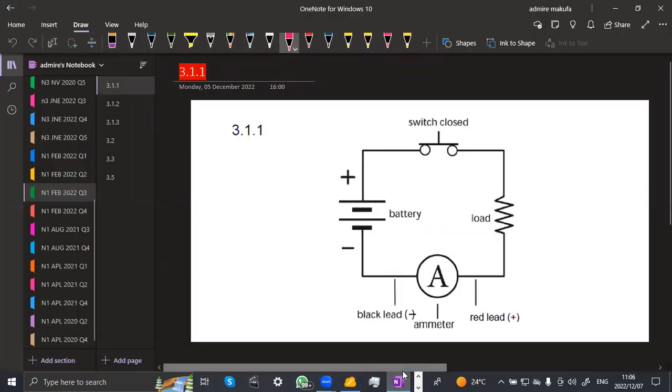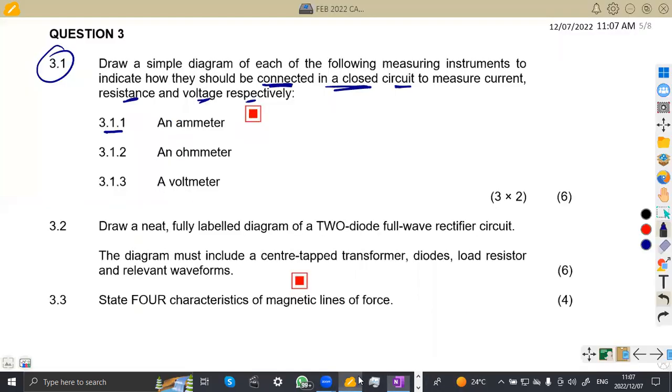We have got the circuit here. So that's 3.1.1. We've got our switch which is closed, the load here, the ammeter, then the battery. Remember ammeter measuring current. But what is important is to show that it is in series. That is the major important part. And also to show that it's a closed switch because we are told it's a closed circuit.